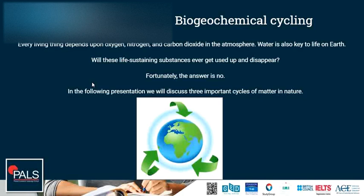So what is biogeochemical cycling? Everything living depends upon oxygen, nitrogen, and carbon in the atmosphere. Water is also key to life on Earth. Will these life-sustaining substances ever get used up and disappear? The answer to that question is no. The substances will not run out since they are constantly recycled on Earth. There is no input of new substances in our biosphere, and there is no export of these substances from our biosphere.